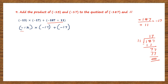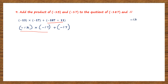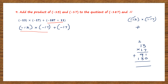Now we work out the multiplication: minus 13 into minus 17. Minus into minus is plus. Now multiply 13 by 17: seven threes are 21, carry 2; seven ones are 7, plus 2 is 9, giving 90; one threes are 3; one ones are 1. Adding: 90 plus 130 gives 9 plus 3 is 12, carry 1; 1 plus 1 is 2. So 13 times 17 equals 221, and the result is plus 221. We now have 221 plus minus 17.